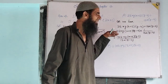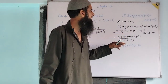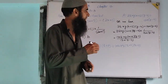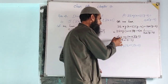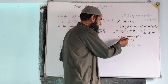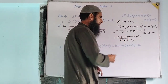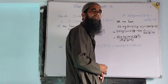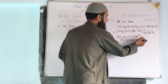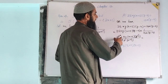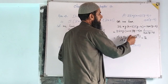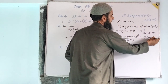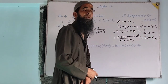Now we cancel the common factors in numerator and denominator. 13 cancels with 13, x cancels with x, and (y-4) cancels with (y-4). We get the answer: 2 times y times (x+5).